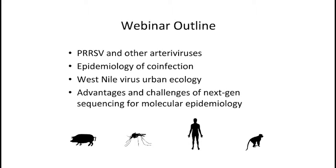Here's a brief outline of what we're going to talk about. We're not going to focus on any one disease system. Rather, I've chosen examples from the work we've done over the past 15 or 20 years that illustrate how molecular epidemiology works in our lab and also illustrates some of the advantages and challenges that next-generation sequencing approaches present. We'll talk about PRRS virus in pigs, co-infection epidemiology in humans and primates, West Nile virus urban ecology, and the advantages and challenges of next-generation sequencing.